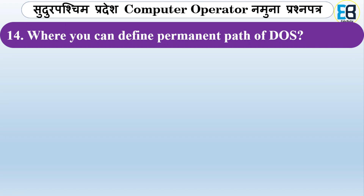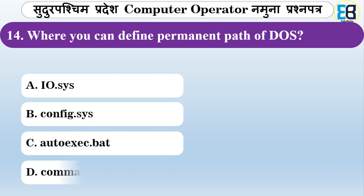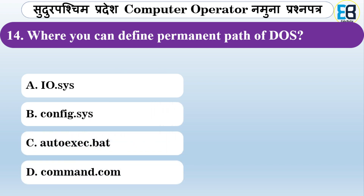Where can you define the permanent part of DOS? Options are ORDER.SYS, CONFIG.SYS, AUTOEXEC.BAT, or COMMAND.COM. The permanent part of DOS can be defined in CONFIG.SYS and COMMAND.COM.